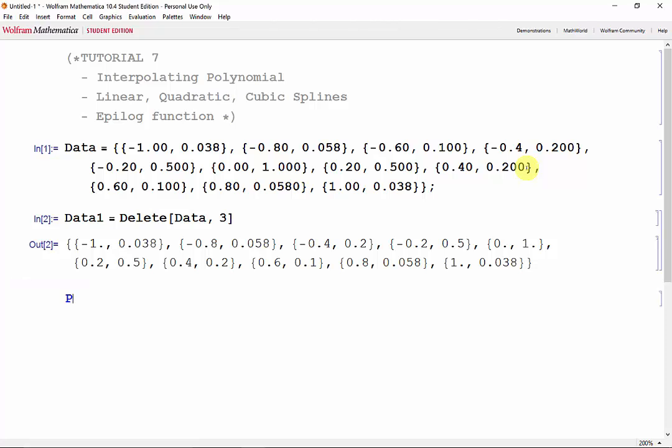So the syntax is interpolating polynomial, your vector containing the data, and the variable that you want the data to be with respect to.